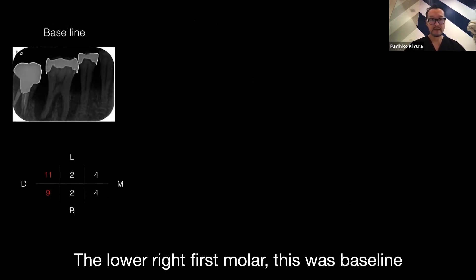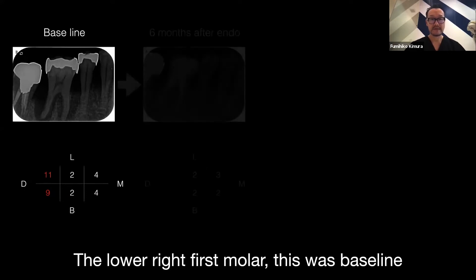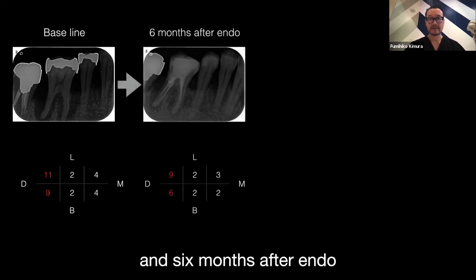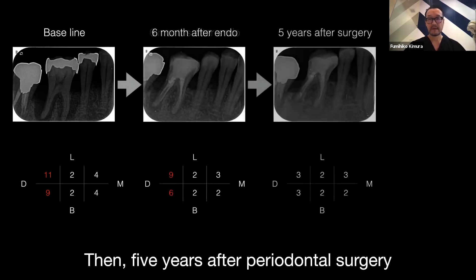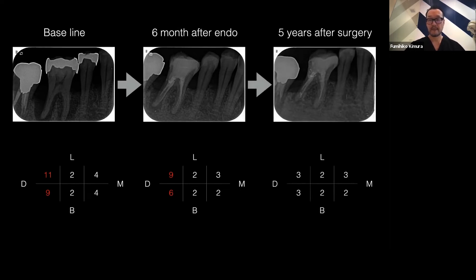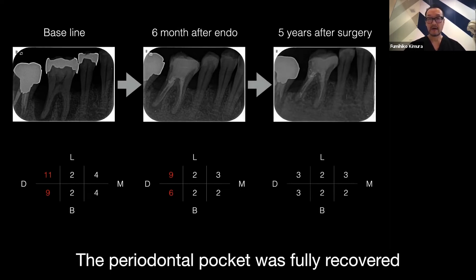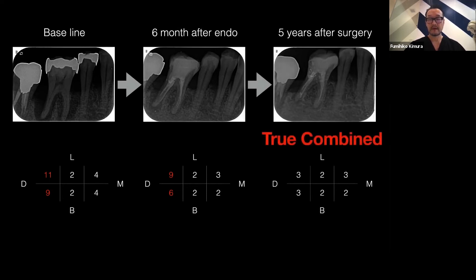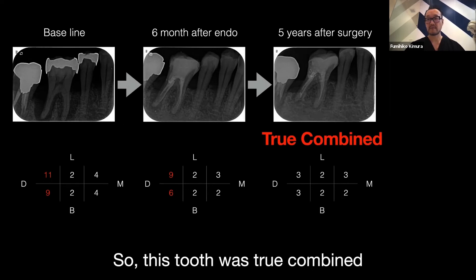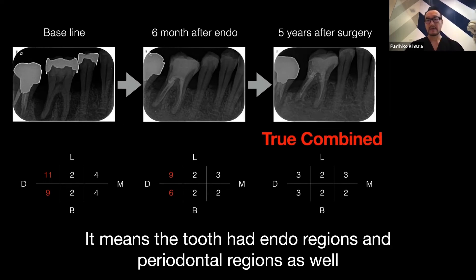For the lower right premolar, this was the baseline, six months after endo treatment, then five years after periodontal surgery — the periodontal pocket was well recovered. So this tooth was a true combined lesion, meaning the tooth had both an endo lesion and a periodontal lesion.